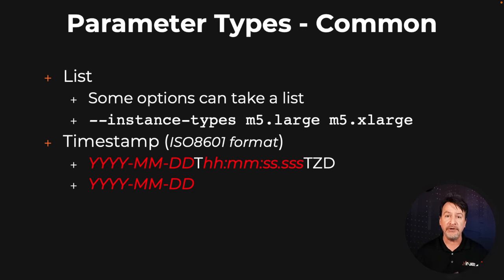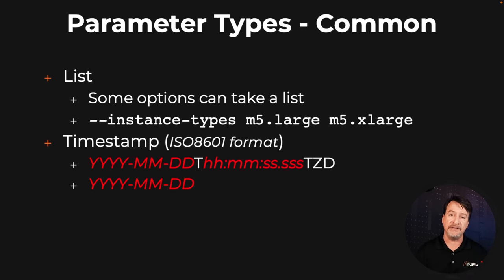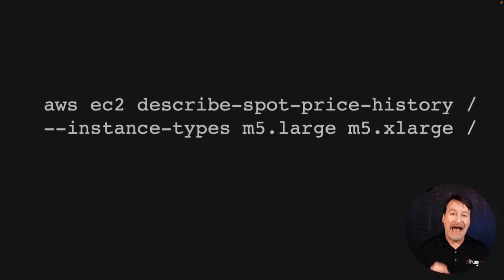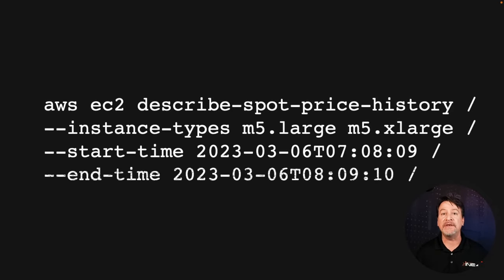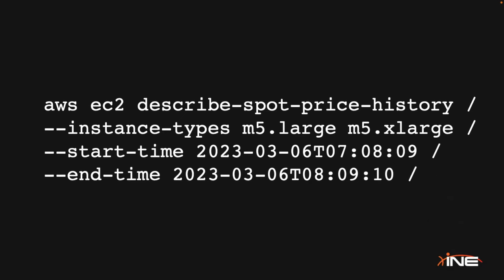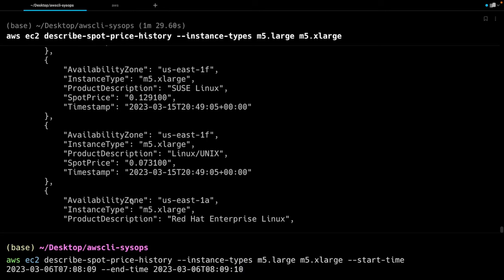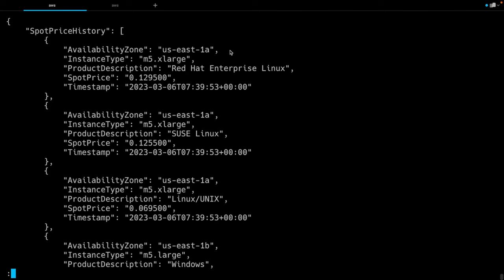You don't have to do the time — you can do just year-month-day. Adding to what we've already done with our command, we have something that's going to bring in that timeframe. Now, what I've got here is the same command: M5 large, M5 extra large, but starting on March 6th, 2023 at 07:08 Zulu and going to 08:09 Zulu of the same day. Run that command, and you can see we now have the results brought into just that timeframe — 7:39, keeping us right in that window. Fantastic.